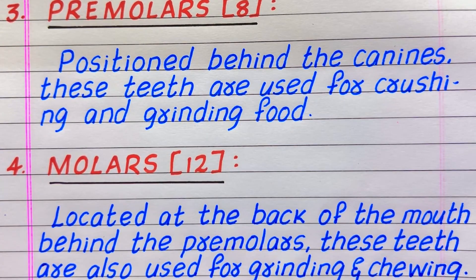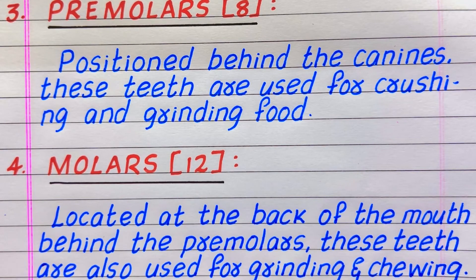The third type of human teeth is premolars. They are eight in number. Positioned behind the canines, these teeth are used for crushing and grinding food.